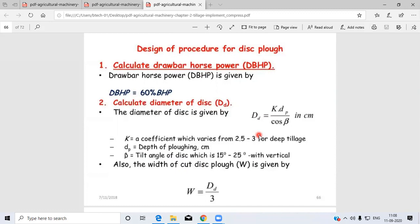Then calculate the diameter of the disc. The diameter is calculated using the formula Dd = K × dp / cos(β) in centimeters, where K is a coefficient which varies from 2.5 to 3 for deep tillage.